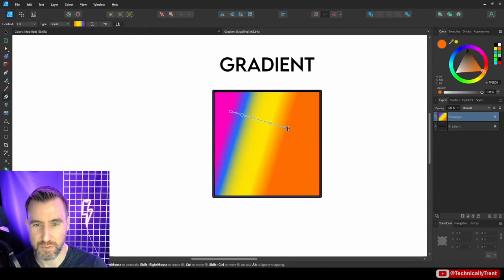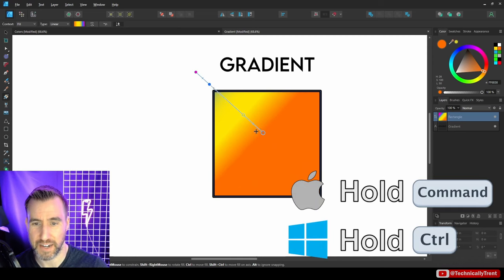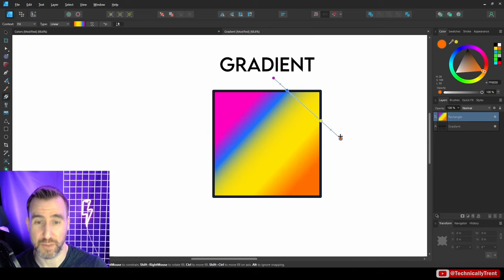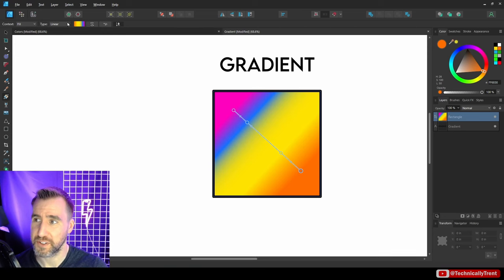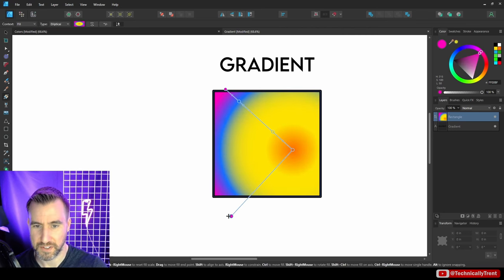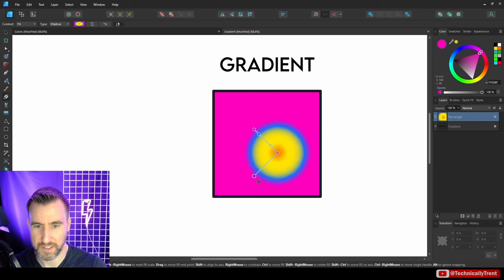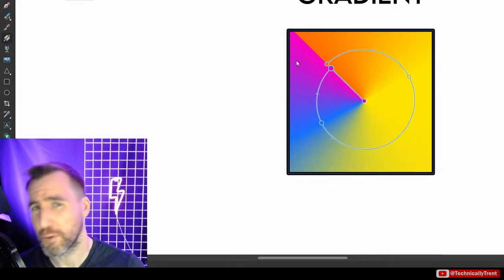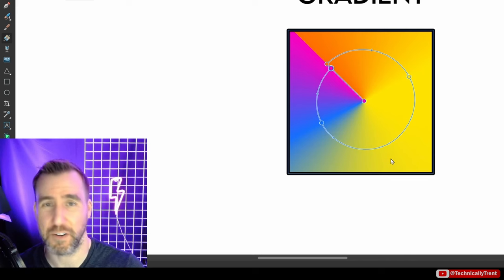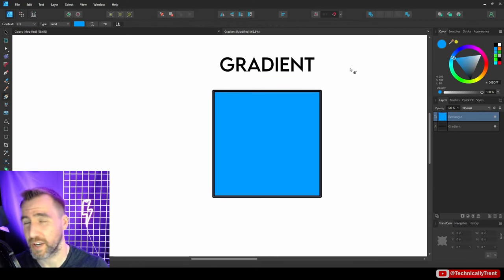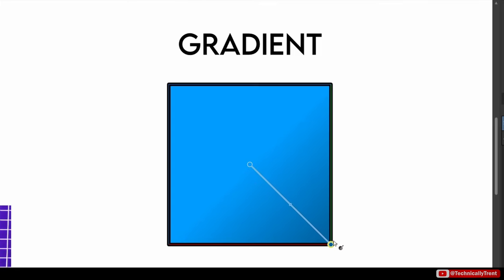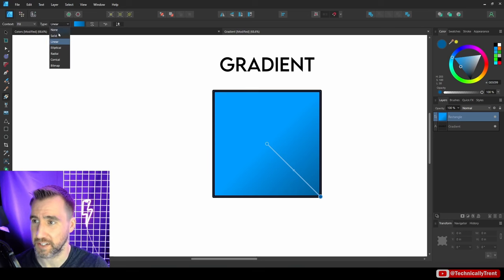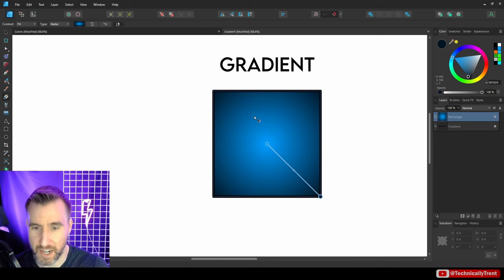Beyond linear gradients, the context toolbar offers elliptical, radial, conical, and bitmap gradient types. The snapping feature works with the gradient tool — for example, drag from center to corner to get a perfectly centered radial gradient. You can also edit gradient colors via the swatch, which shows all color stops and allows fine adjustments including opacity and midpoint position.